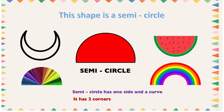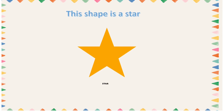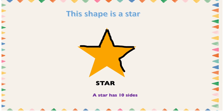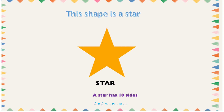You can find it in objects like a moon, a hand fan, a watermelon, and a rainbow. All these shapes have the shape of a semicircle. This shape is a star. A star has ten sides: one, two, three, four, five, six, seven, eight, nine, ten.